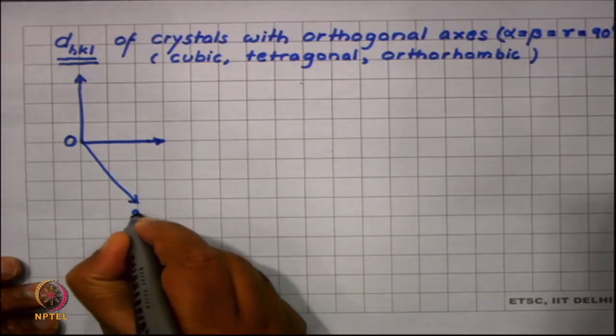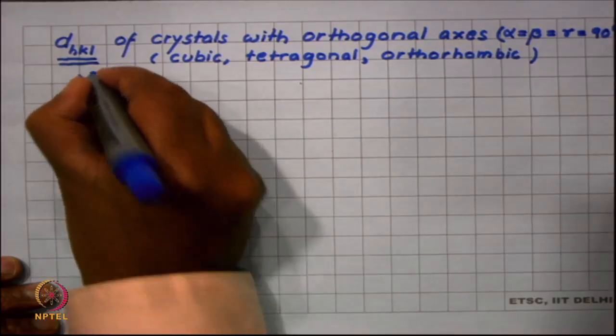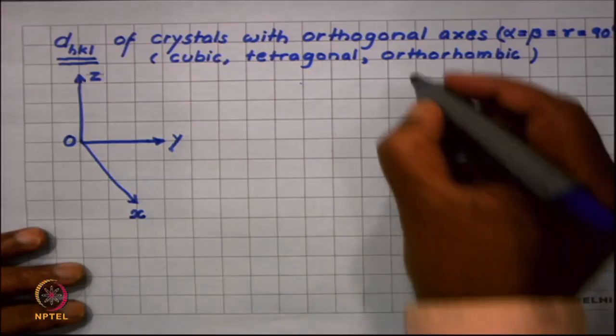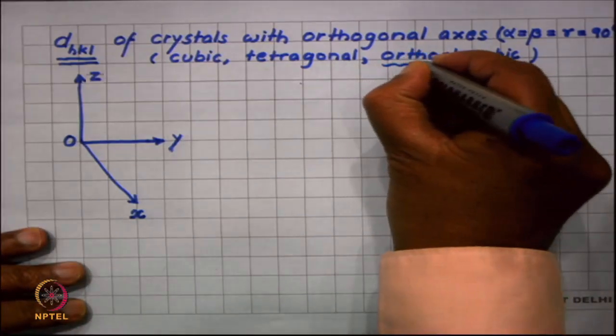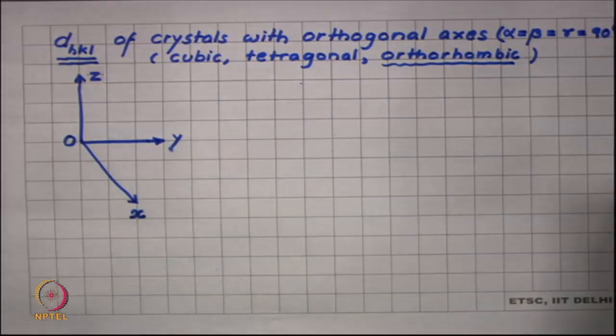Let us say that this is the origin and these are the three axes of my orthogonal system. Could be cubic, could be tetragonal, and could be orthorhombic. To keep it general let us start with orthorhombic, later on we will specialize for tetragonal and cubic.